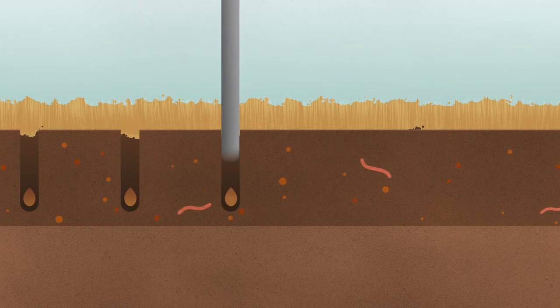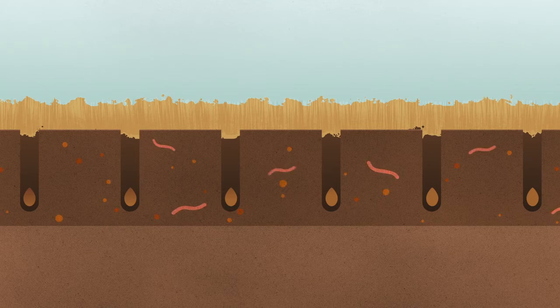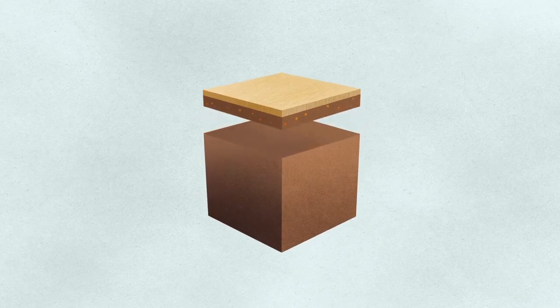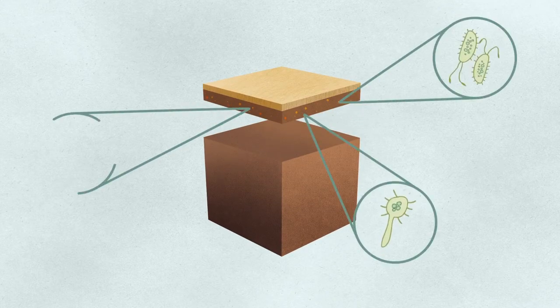Conservation tillage practices also allow farmers to plant crop seeds directly into stubble fields and can boost earthworm populations by as much as 50%. This leads to healthier topsoil, the upper layer of the soil, which has the highest concentration of organic matter and microorganisms.